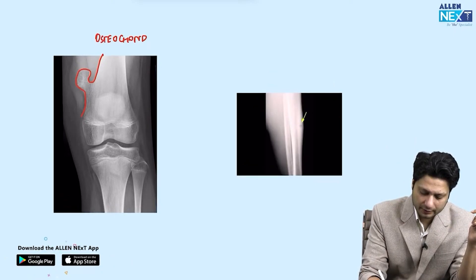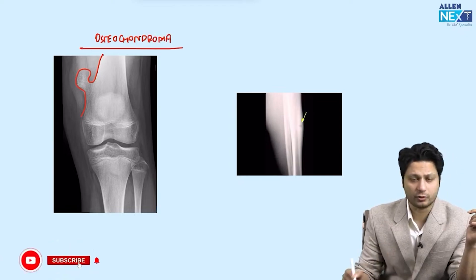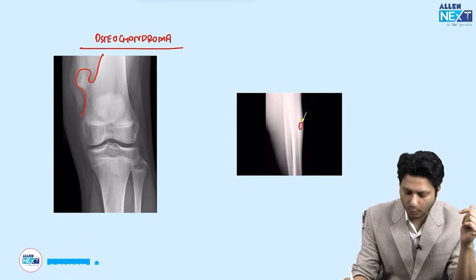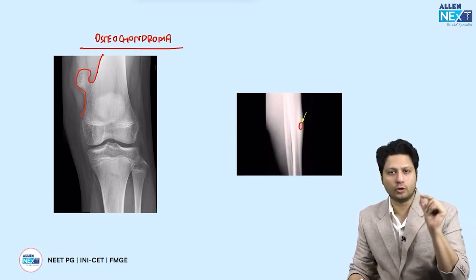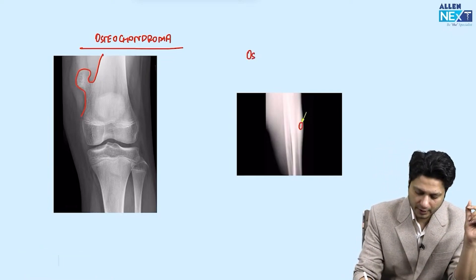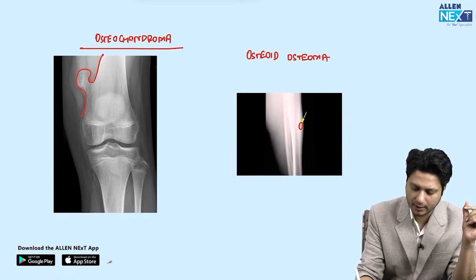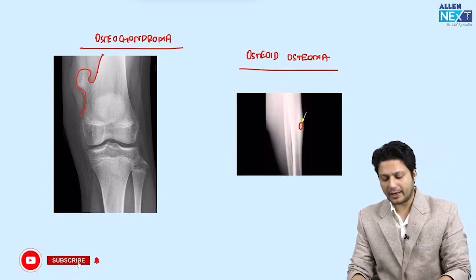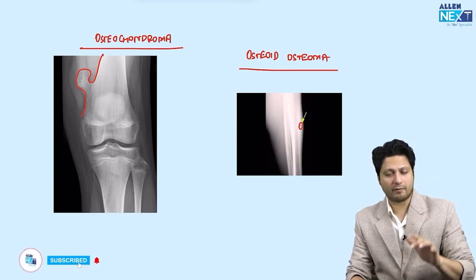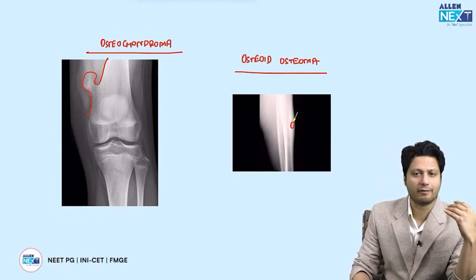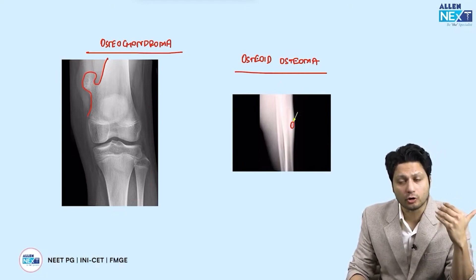If there is a radiolucent nidus in the long bone cortex, the answer is osteoid osteoma. Giant cell tumor, osteosarcoma, chondroblastoma, and osteochondroma have all been asked in previous examinations — questions based purely on X-ray identification.